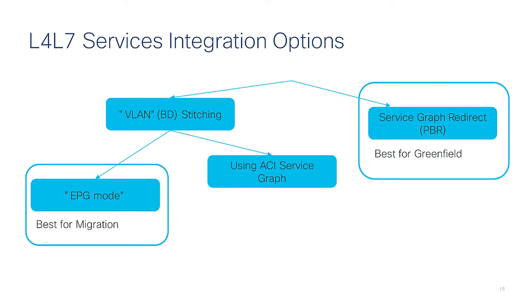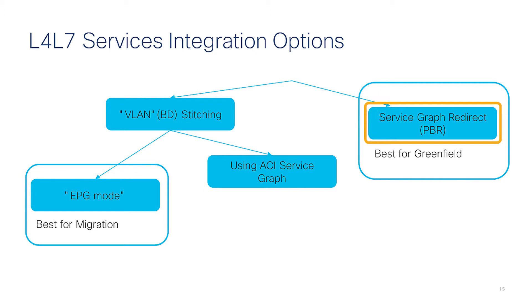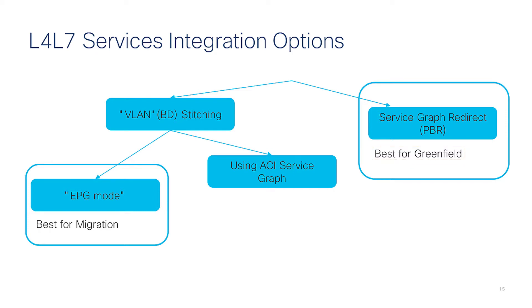Looking at this from a high-level chart perspective, there is the option to do VLAN/BD stitching or VRF sandwiching in two different ways: EPG mode or with service graph. Or you can use service graph with redirect mode. The redirect mode is definitely the best for greenfield deployments because it offers so many features and flexibility. The EPG mode is best for migration because it's very easy to map existing networks to the ACI infrastructure.